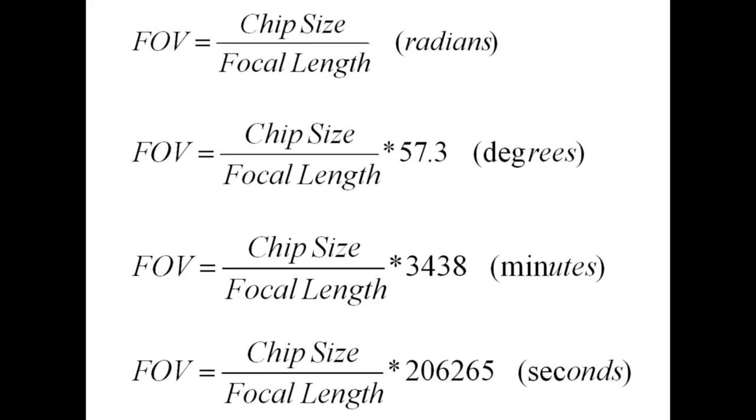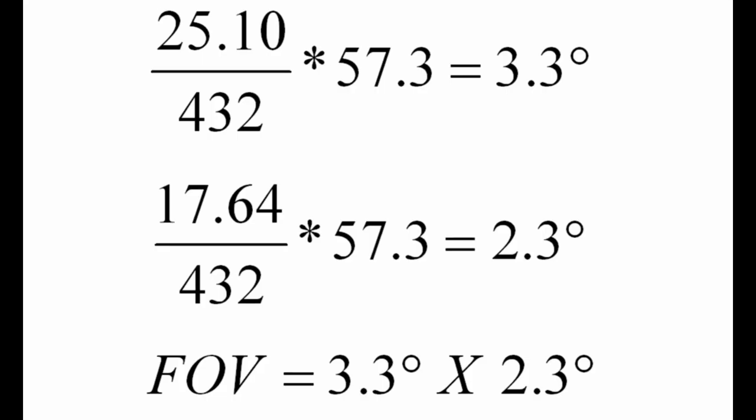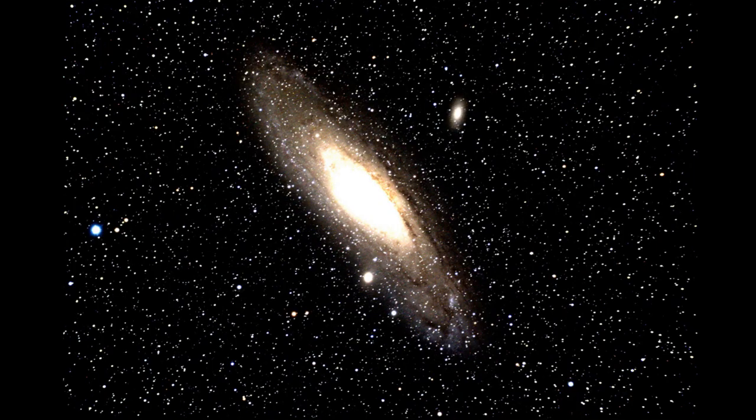Now let's use this equation to find out the maximum field of view I can get with my equipment. We'll want to use the camera with the biggest chip size and the telescope with the shortest focal length. I've already mentioned I have the Orion Starshoot Pro camera. The chip size is 25.10 millimeters by 17.64 millimeters. I have a small refractor by Astro Tech that has a focal length of 432 millimeters. We use the formula twice, once for the width and once for the height, and we find my field of view to be 3.3 degrees by 2.3 degrees. This is just big enough to take a picture of the Andromeda galaxy. Here's a picture of Andromeda that I took.